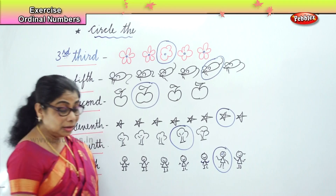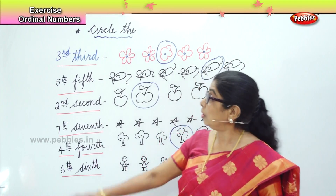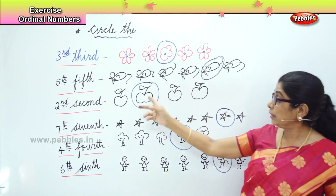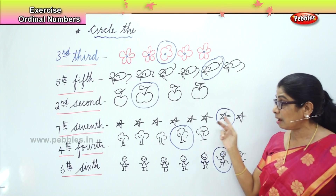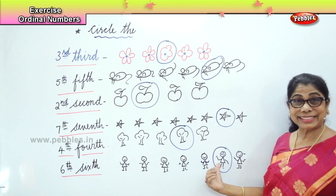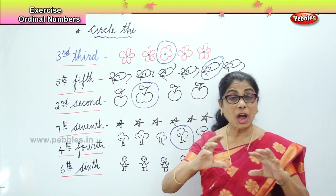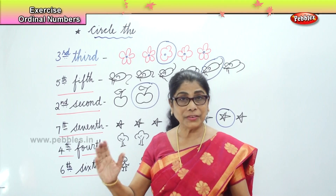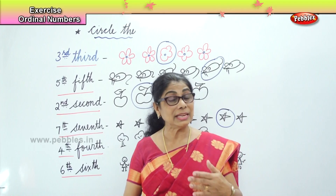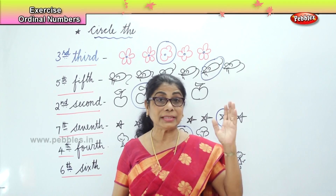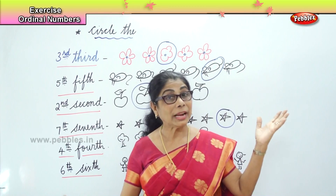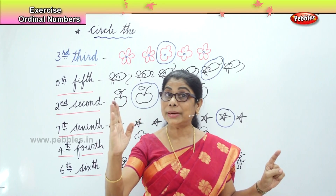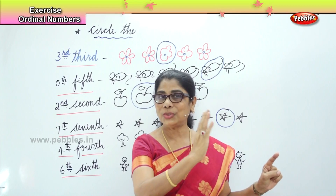So what have we done now? We learned to circle ordinals according to what is given: the third flower, the fifth mouse, the second apple, the seventh star, the fourth tree, and the sixth girl. Ordinal placement — where are you placed in the line? Ordinal numbers: first, second, third. Similarly we'll have the eleventh, twenty-first, thirty-third, hundredth — wherever. Whatever position you are placed in a line of ordinal numbers, where are you coming? After what?